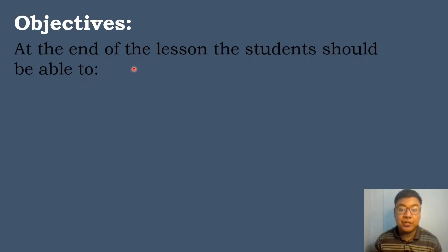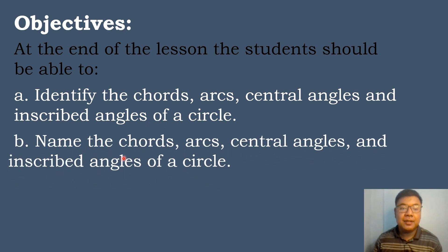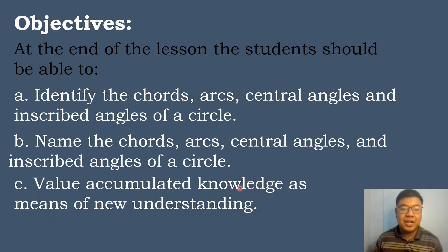Let's have the following objectives in today's topic. At the end of the lesson, the students should be able to: Letter A, identify the chords, arcs, central angles, and inscribed angles of a circle. Letter B, name the chords, arcs, central angles, and inscribed angles of a circle. And Letter C, value accumulated knowledge as means of new understanding.